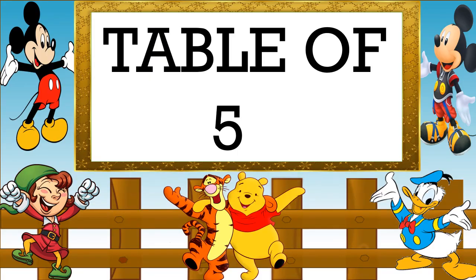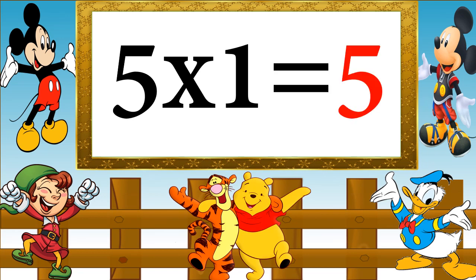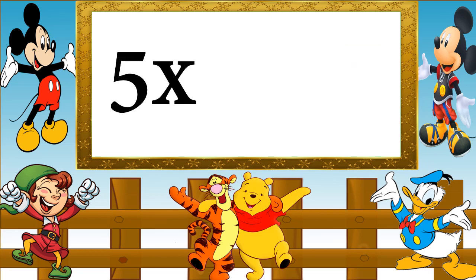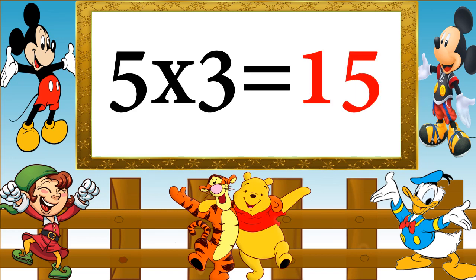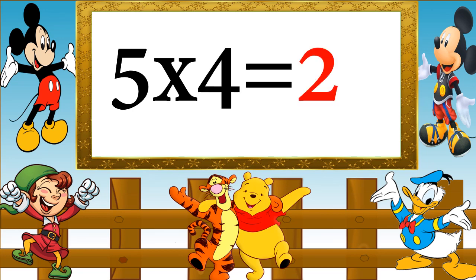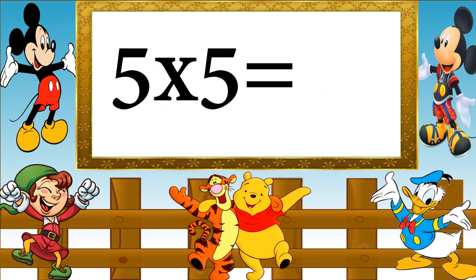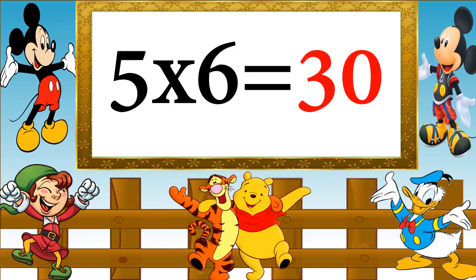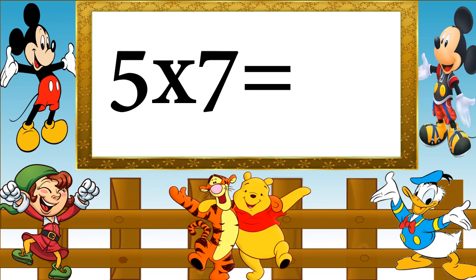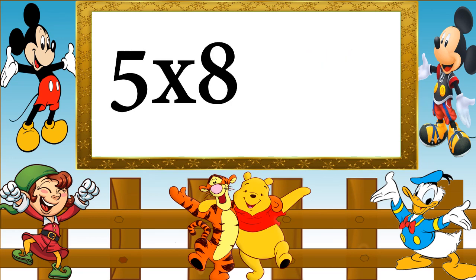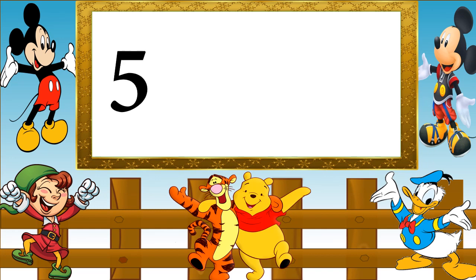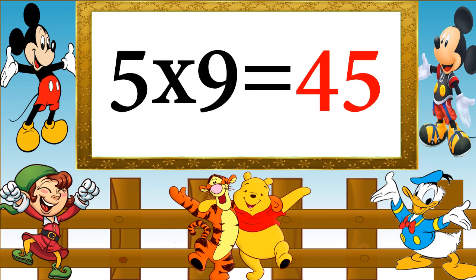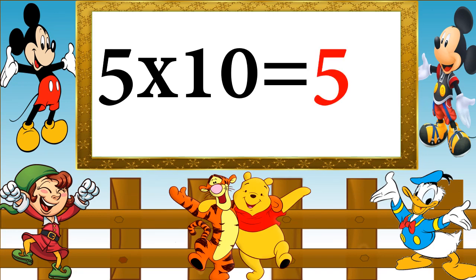Table of 5. 5 ones are 5, 5 twos are 10, 5 threes are 15, 5 fours are 20, 5 fives are 25, 5 sixes are 30, 5 sevens are 35, 5 eights are 40, 5 nines are 45, 5 tens are 50.